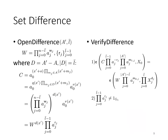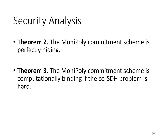Our set difference makes use of the fundamental theorem of arithmetic. The commitment value C has the structure of the monic polynomial constructed by set A. If there exists another monic polynomial constructed by set D such that the set D monic polynomial cannot divide the set A monic polynomial, then there must exist a quotient and a non-zero remainder. That's why in our verify difference, we also check that the remainder is not a zero value. We prove that our proposed Monopoly set commitment scheme is perfectly hiding in Theorem 2, and in Theorem 3 we prove it is computationally binding if the QCOSDH problem is hard.